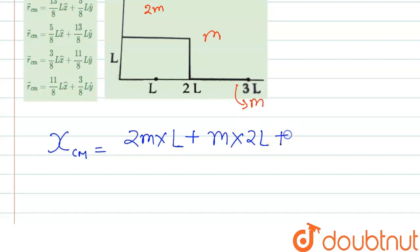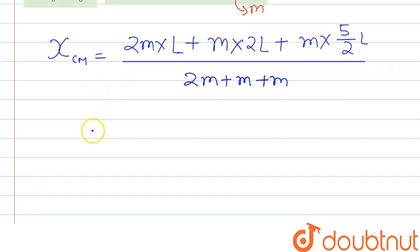So it will be 2L. Plus the third bar, we see that the middle point is somewhere here, and from the origin it will be 5 by 2L. So we can write the mass M into 5 by 2L, divided by the total mass that is 2M plus M plus M.